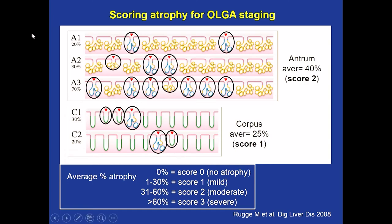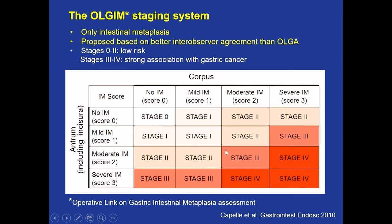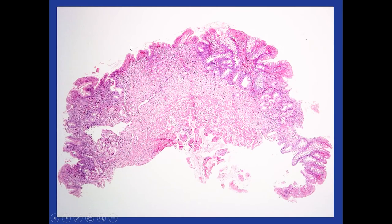How is the scoring done? Each row represents a biopsy. Here is a normal gland from the antrum and a normal gland from the corpus. The pathologist assesses the percentage of glands that are atrophic — the blue lines are intestinal metaplasia and the small glands represent atrophy without metaplasia. These are difficult to see without experience, which causes high interobserver variation. After each biopsy is scored with a percentage, an average is calculated for the antrum and corpus, based on less than 30%, 30–60%, or more than 60% atrophy in each compartment. The OLGIM system uses the same concept but only evaluates intestinal metaplasia, with very good interobserver agreement because intestinal metaplasia is easier to diagnose.